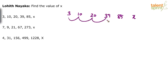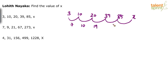Look at the differences between consecutive numbers. 3 and 10: the difference is 7. 10 and 20: the difference is 10. 20 and 39: the difference is 19. 39 and 85: the difference is 46. And for 85 and x we don't know the difference yet, but accordingly some difference would come here.